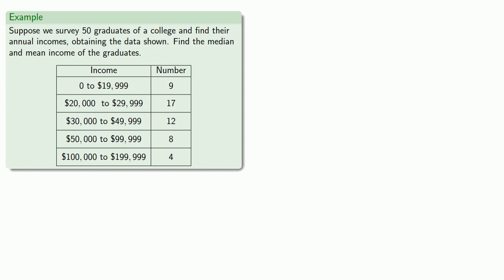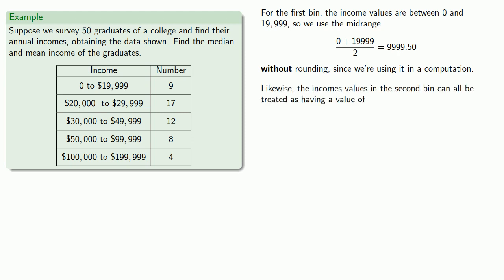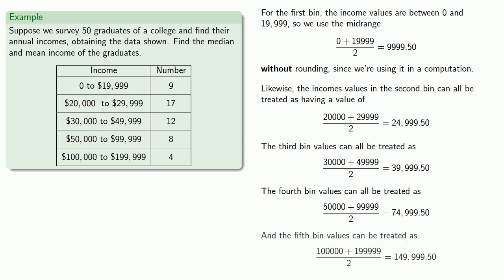How about the mean? We could do the same thing as we did before, which is to use the middle of the bin as our representative value. So for the first bin, the income values are between zero and $19,999, so we use the mid-range. And it's important to keep in mind that we have to use this value without rounding because we're using it in a computation. Likewise, the income values of the second bin can all be treated as having a value equal to the mid-range, $24,999.50, and for the third bin, fourth bin, and fifth bin.